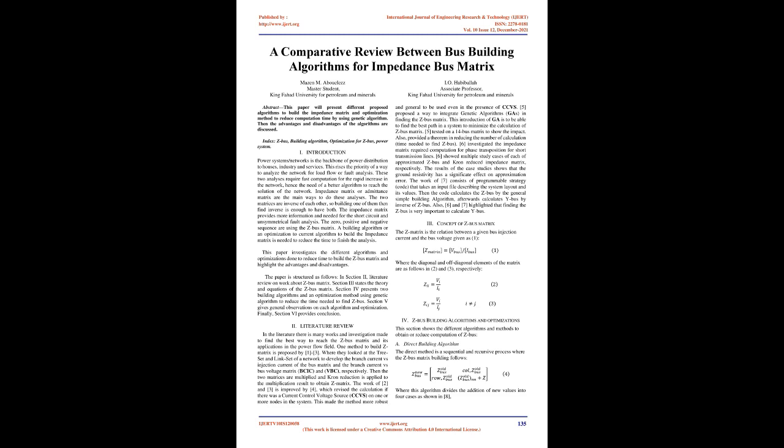The two matrices are inverse of each other, so building one of them then finding the inverse is enough to have both. The impedance matrix provides more information and is needed for short circuit and unsymmetrical fault analysis. The zero, positive, and negative sequence analyses use the Z-bus matrix. A building algorithm or an optimization to the current algorithm to build the impedance matrix is needed to reduce the time to finish the analysis.